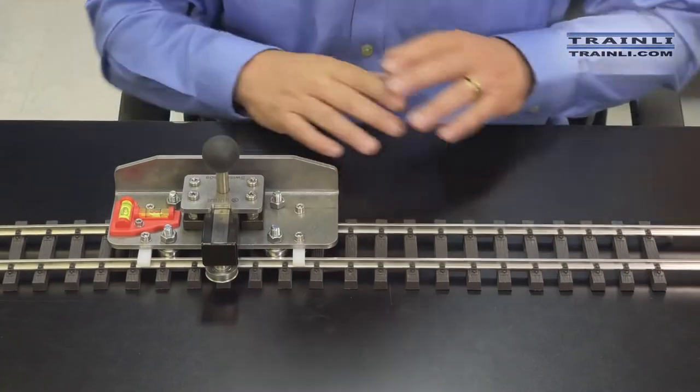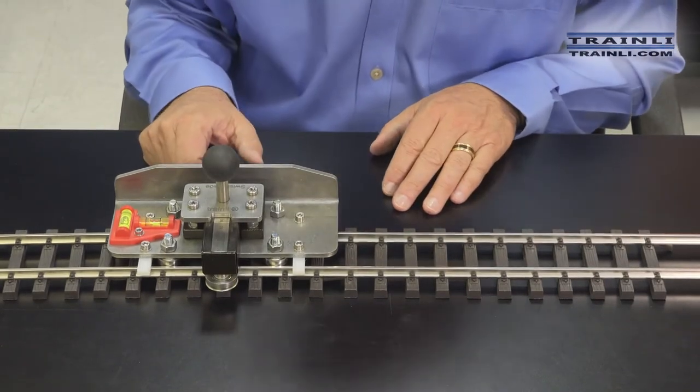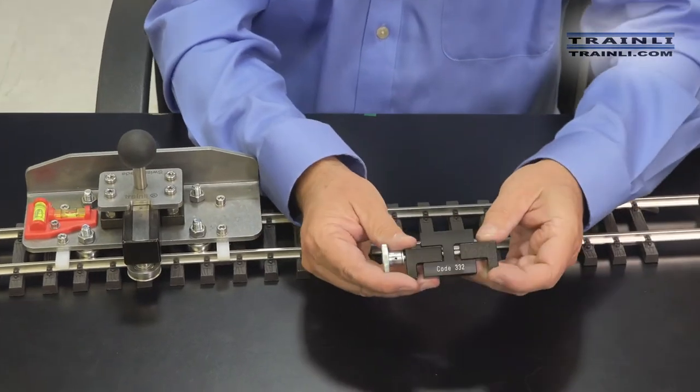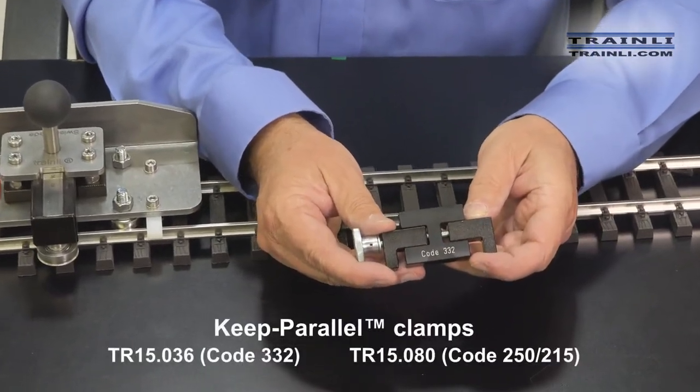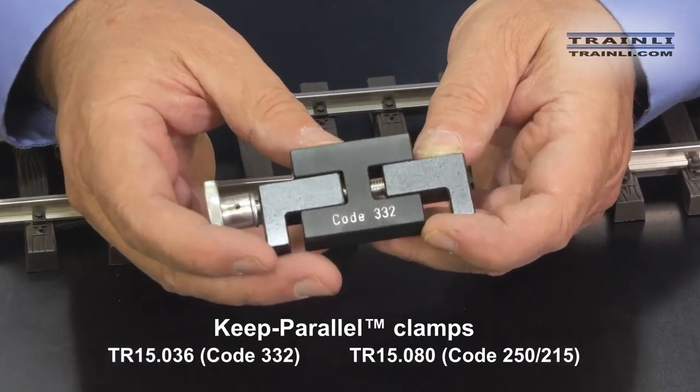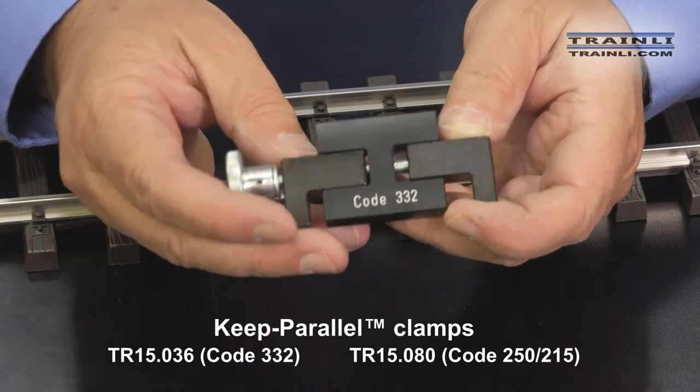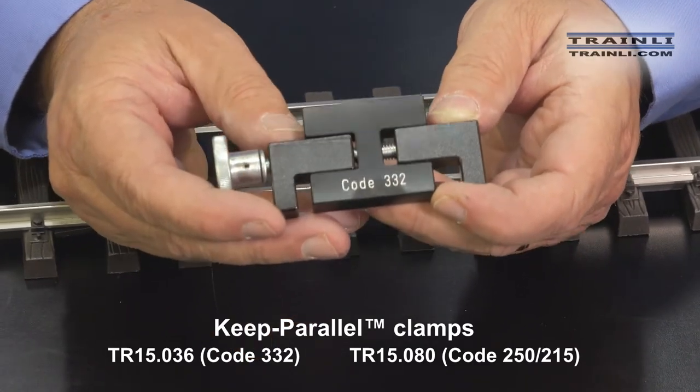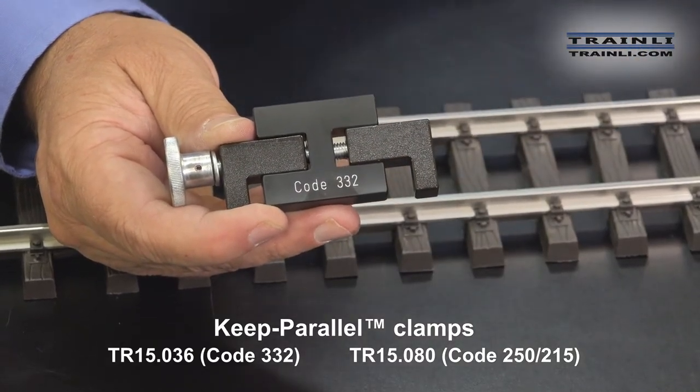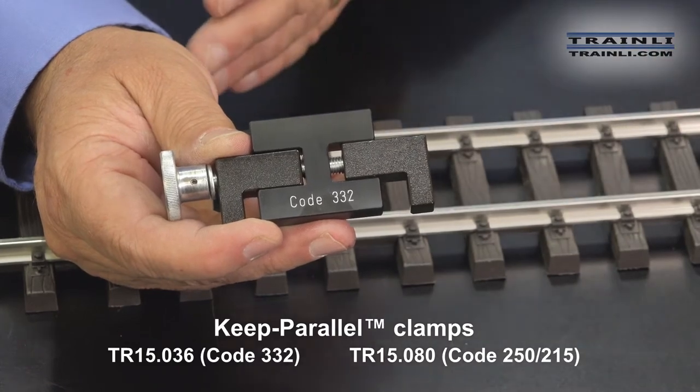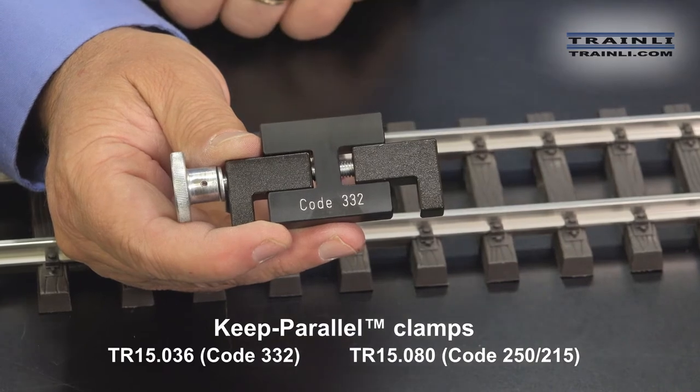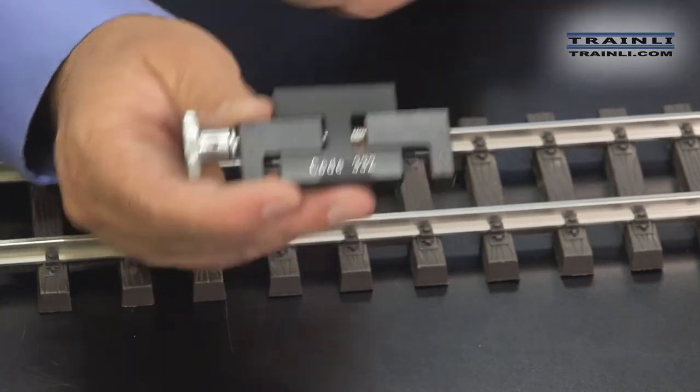We have one additional tool that complements the train lead dual rail bender, and that is our keep it parallel rail clamp. And it comes for different size rails. So this is the 332 rail clamp. And it holds the rails in place at a 90 degree angle so that when you are finished bending your rails, you can line this up to a switch or another section of track that has the rails cut at the same length. So it's very easy to use.